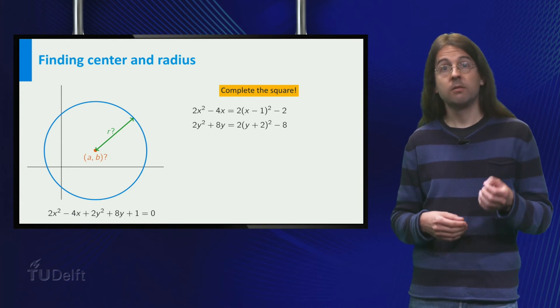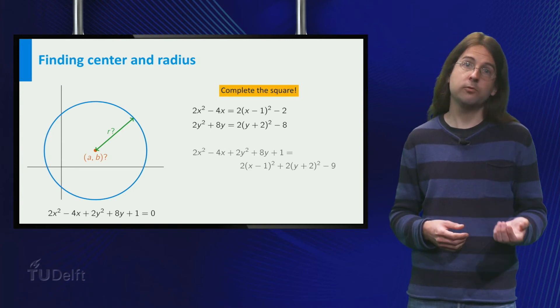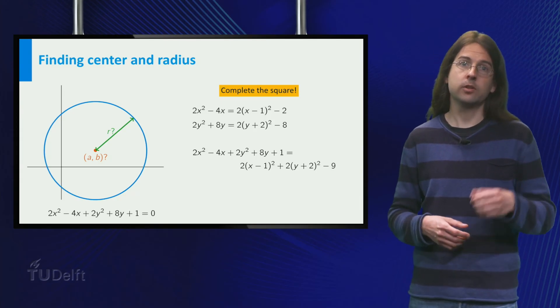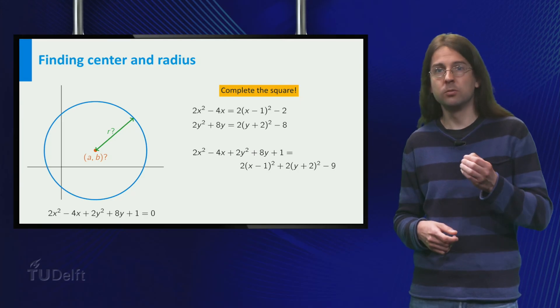Thus we find that x squared minus 4x plus 2y squared plus 8y plus 1 equals 2 times x minus 1 squared plus 2 times y plus 2 squared minus 9.